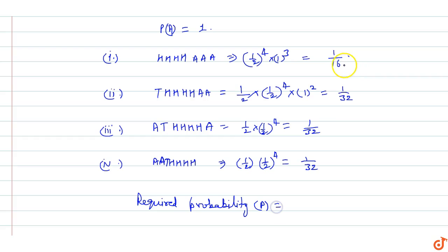Probability P equals 1/16 plus 1/32 plus 1/32. 1/32 means 3 times 1/32, so 3/32. This will be 16 divided by 2, 2 plus 3.